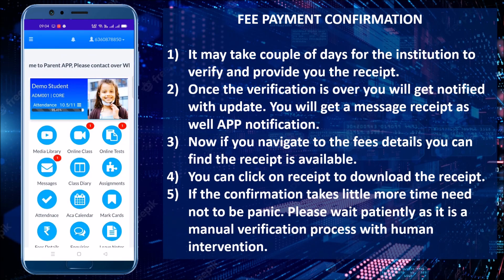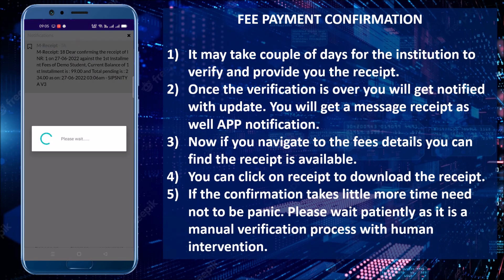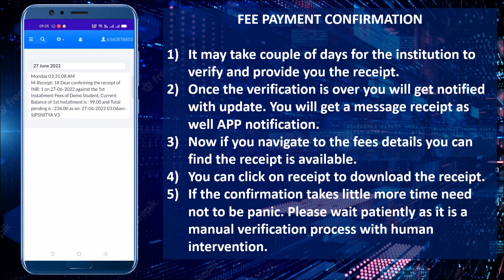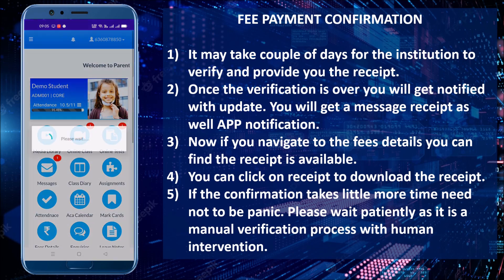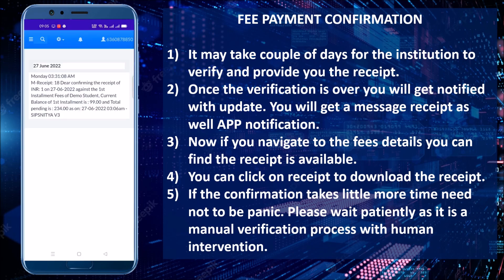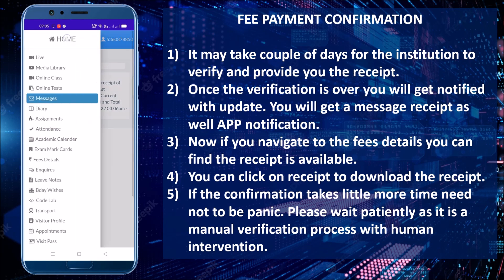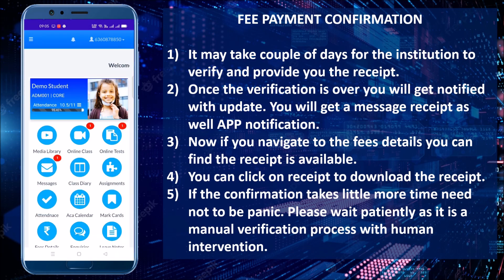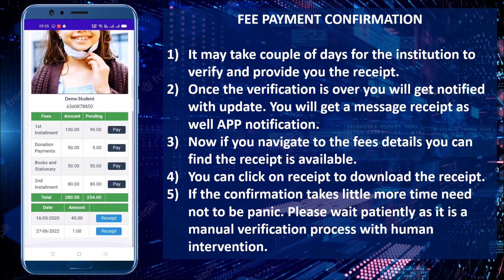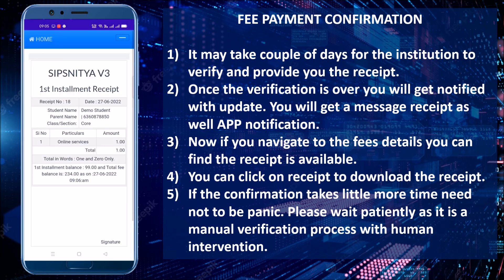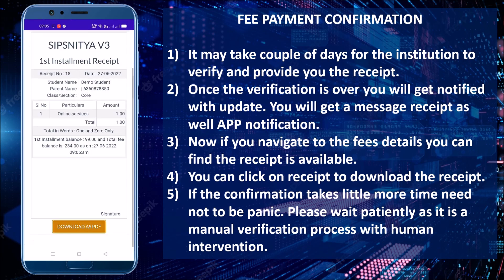It may take a couple of days for verification at the institutional end. You will be notified immediately upon verification via SMS or app notification. You will also receive a message receipt. You can log back into the application to see received messages for confirmation. Once the receipt is generated, the processing button changes to a receipt button — click it to see the preview of the receipt.